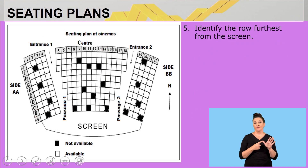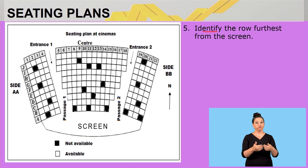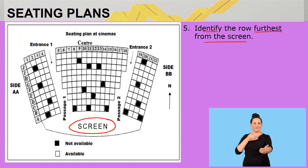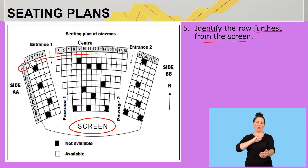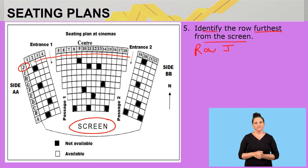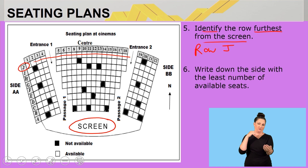Question five: identify the row furthest from the screen. Here is our screen — the row furthest from it will be row J, right at the back. So the answer is row J.